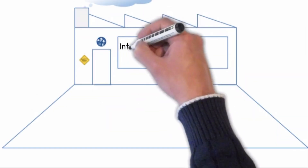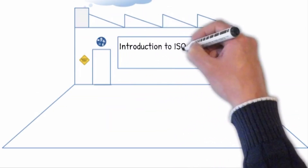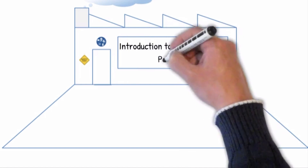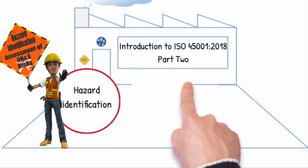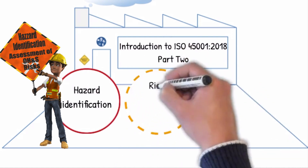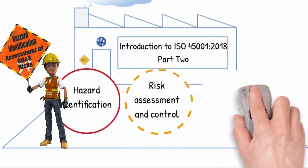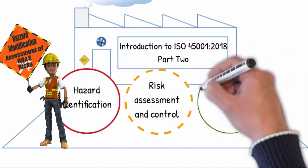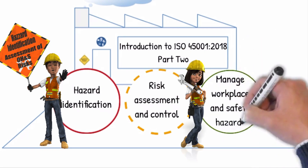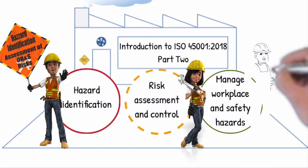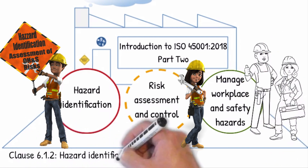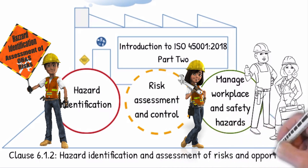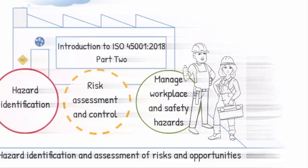Welcome to the introduction to ISO 45001 2018, part 2. In this video we are going to look at how to implement a process for hazard identification, risk assessment and control to effectively manage workplace and safety hazards within the organization, by involving the participation of workers and, as applicable, their representatives, according to Clause 6.1.2, Hazard Identification.